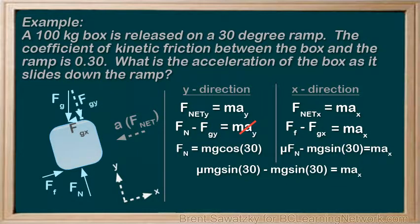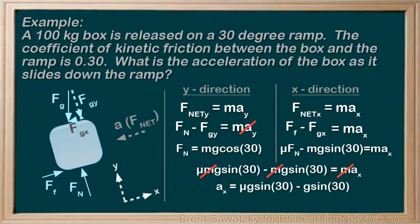And rearranging for AX, we see that the masses actually cancel out. True, that the bigger the mass, the greater the gravitational force pulling it down the ramp. But also, the bigger the mass, the greater the force of friction. And they balance each other out. The acceleration of the box would simply be dependent on the angle of the ramp and the coefficient of friction. At 30 degrees, and with mu being 0.30, the acceleration turns out to be negative 2.4 meters per second squared.